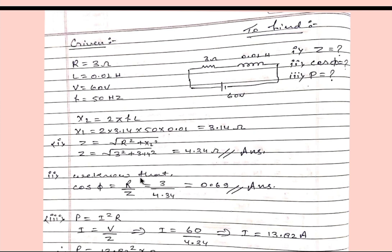Now the second one, we know that power factor is the ratio of resistance and impedance. So resistance is 3 and impedance is 4.34 and it will be 0.69. This will be our power factor.